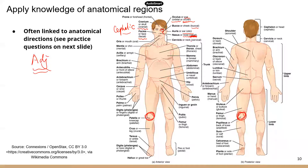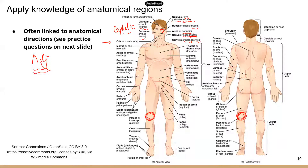Cervical refers to the neck. We have cervical vertebrae — those are the vertebrae found in the neck area. Now let's move on. Oral refers to the mouth — that's the last part of the head area we'll cover here.